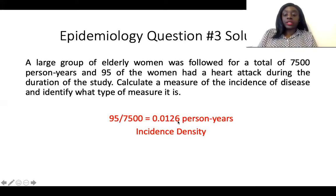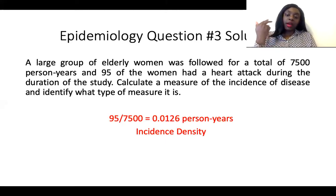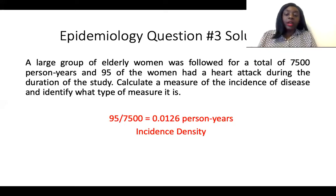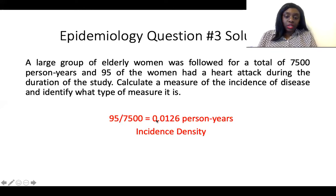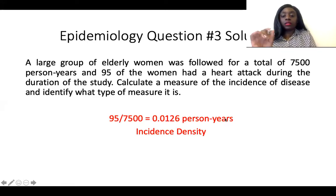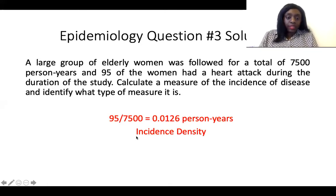In other problems, they may specify multiplying by 100, 1,000, or 100,000 — essentially a power of 10 measure. In this case, it wasn't specified, but if they asked for incidence density multiplied by 100, you would get 1.26 per 100 person-years. This measure is, of course, identified as incidence density.